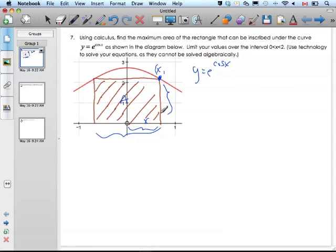This height here is y. But I know y is simply e to the cosine of x. That's what this coordinate point is.